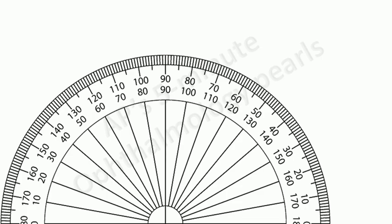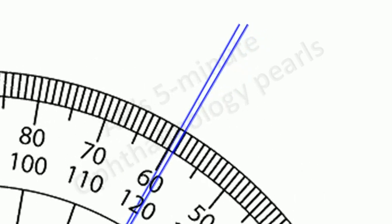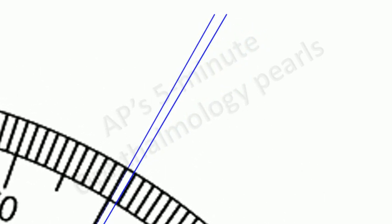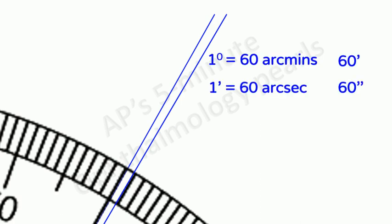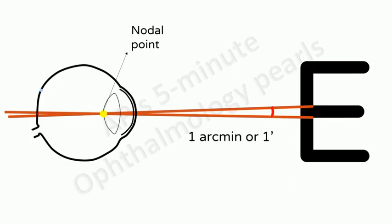What is an arc minute? This is a protractor showing degrees of an angle. Each degree is divided into 60 arc minutes and each arc minute into 60 arc seconds. They are termed arc minutes and arc seconds to differentiate them from the minutes and seconds of time.